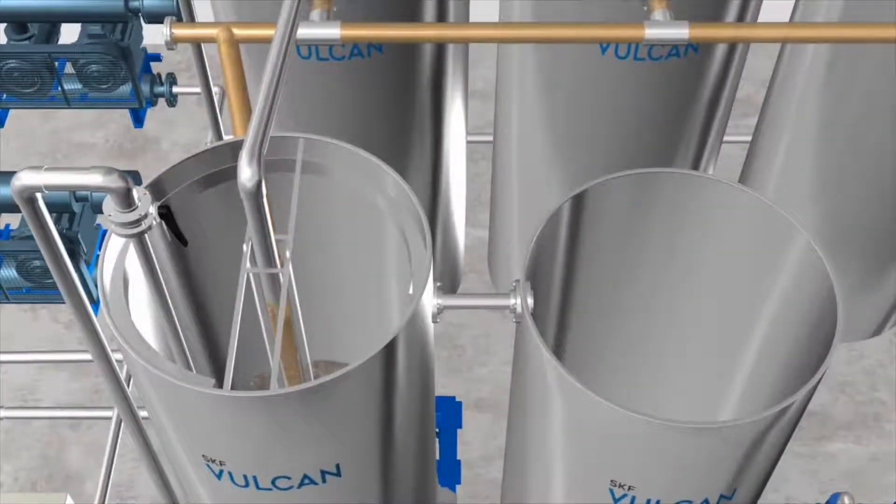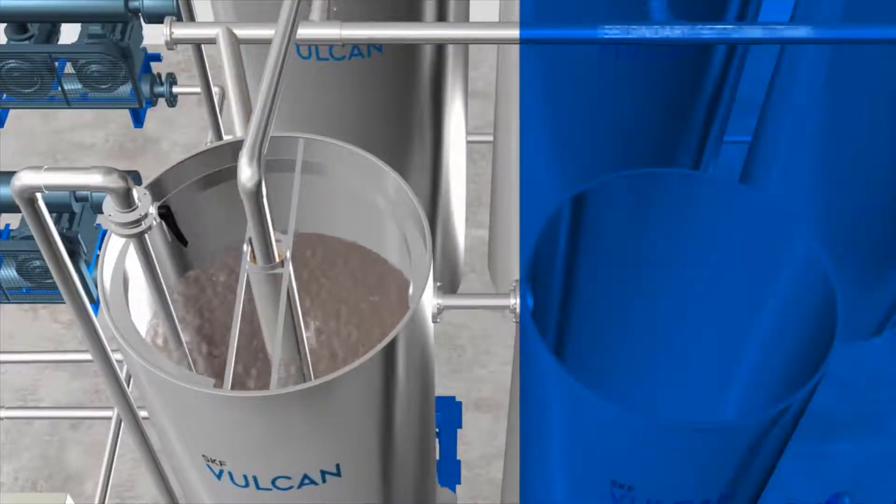Next is the secondary settling tank which separates the sludge from the treated water.